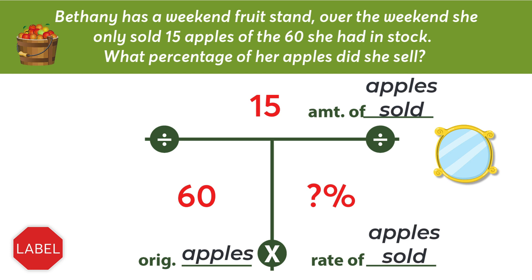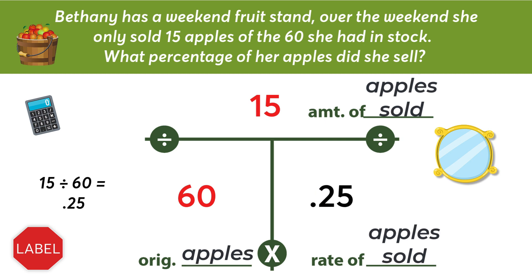Now that I have two out of the three numbers, I can solve the T-Bar. A top and a bottom number, so I divide. TGIF — putting the top number in first — and we get an answer of .25. To turn .25 into a percentage, I move my decimal two spaces to the right, giving me 25%. And that's it.